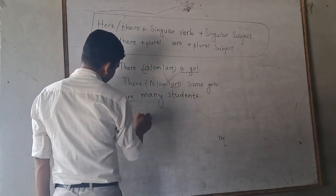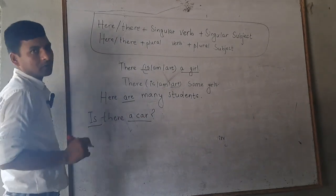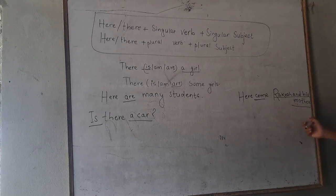Is there a car? This comes according to a car, not according to - you see, come according to Rakesh and his mother, two subject, one with and.